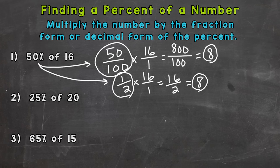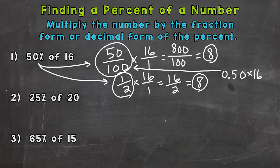The next method is the decimal form of the percent times the number. The decimal form of 50 percent is 0.50, which is equivalent to that fraction — it's just in decimal form. So 0.50 times 16. Whether you use a calculator or do it by hand, you get the same answer of 8.